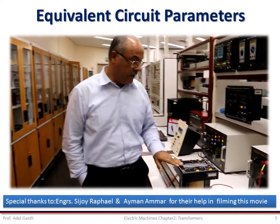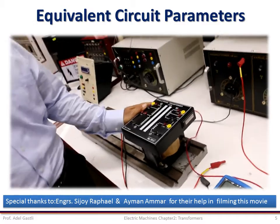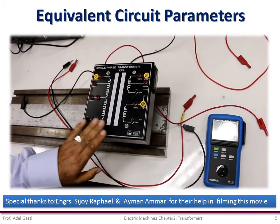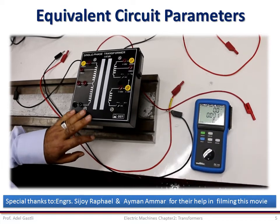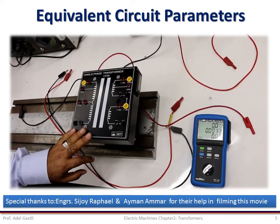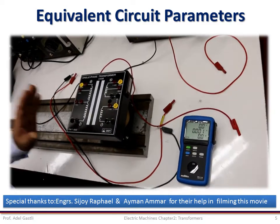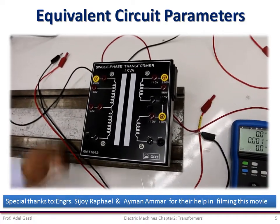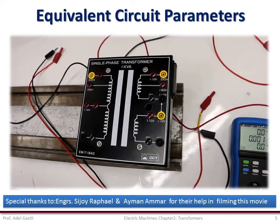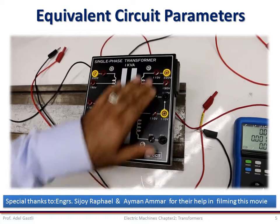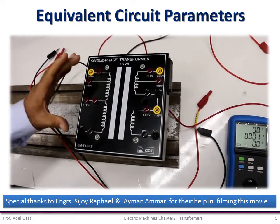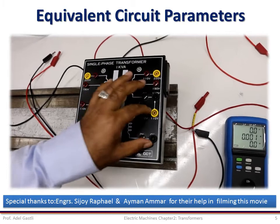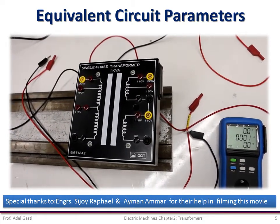Today we're going to talk about the open circuit test and the short circuit test on the transformer. We're going to take one single phase transformer and show how we can run the experiments to calculate the equivalent circuit parameters. Before starting, we look at the nameplate, which has all the information related to power, input voltage, and output voltage. Here we have a single phase transformer with two windings in the secondary. We're going to take only one winding; our voltage supply will be 220 volts, the output in the secondary will be 110 volts, and the power is 1 kilovolt amp.